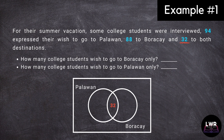In order to get the other data for Palawan, we will subtract 32 from 94 to get 62, which is the number of college students who wanted to visit Palawan only.